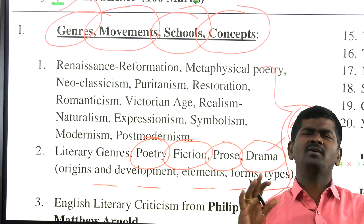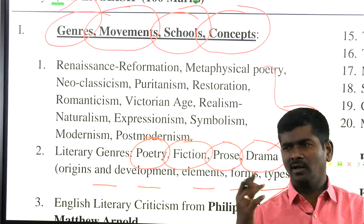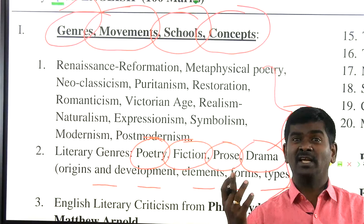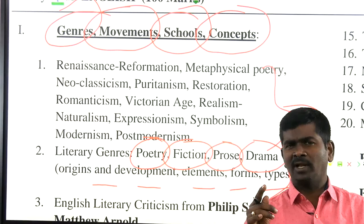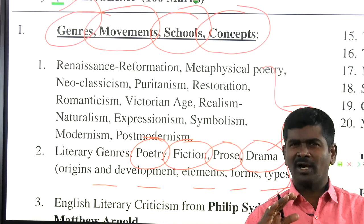Elegy is introduced by Theocritus. Elegy refers to lamentation. Who wrote a lot of elegies in the form of dream allegories from German? Rainer Maria Rilke. What is the first dream allegory in English? Book of the Duchess, written by Geoffrey Chaucer. You need to have a strong foundation about genre.